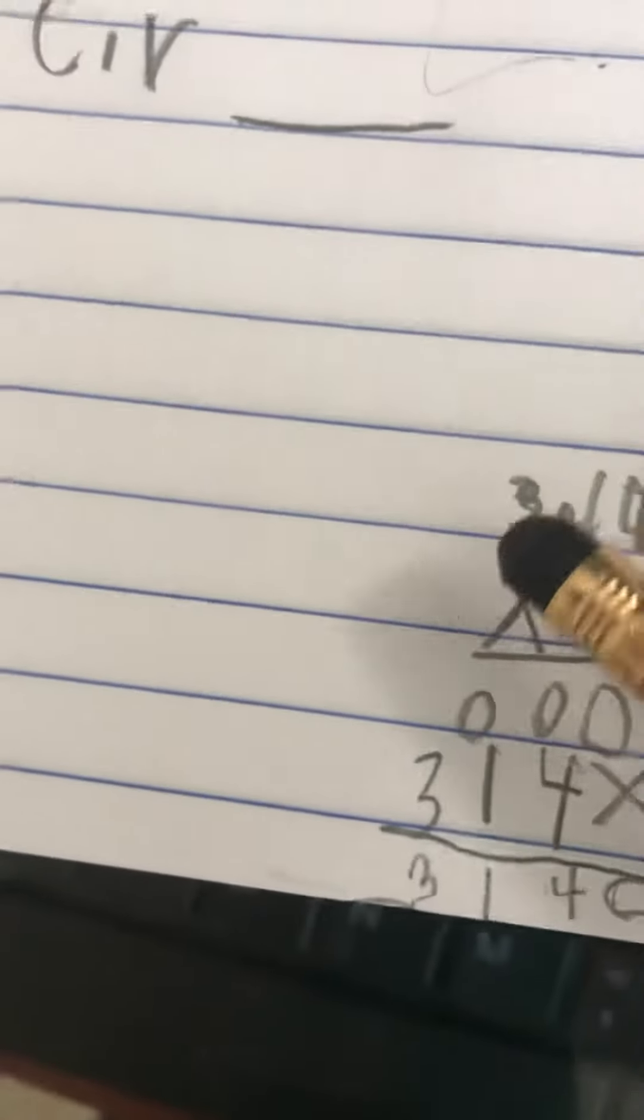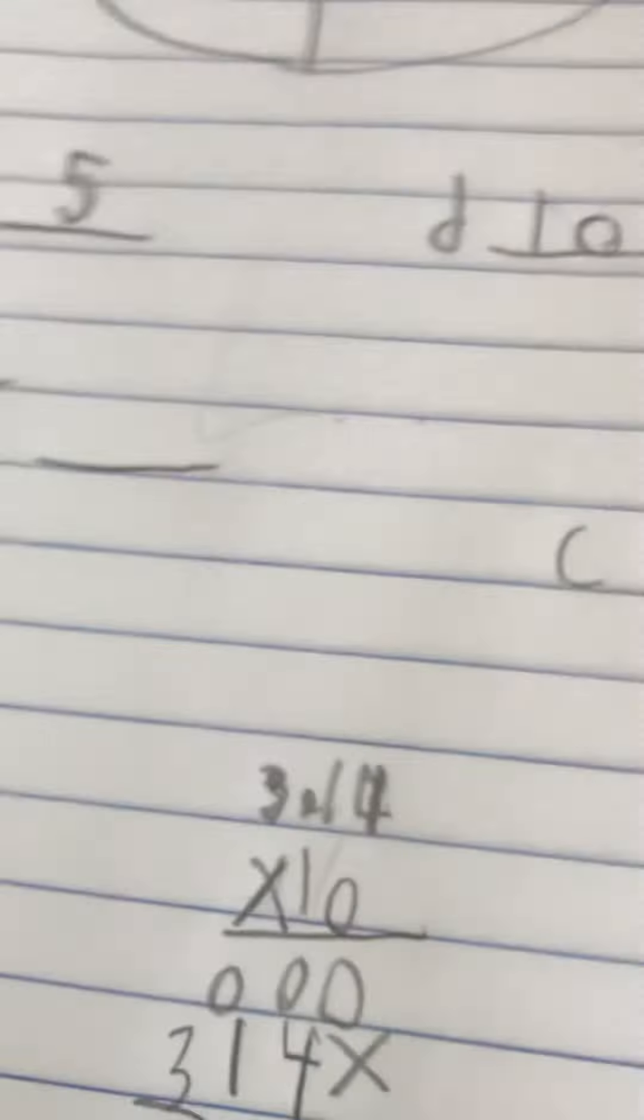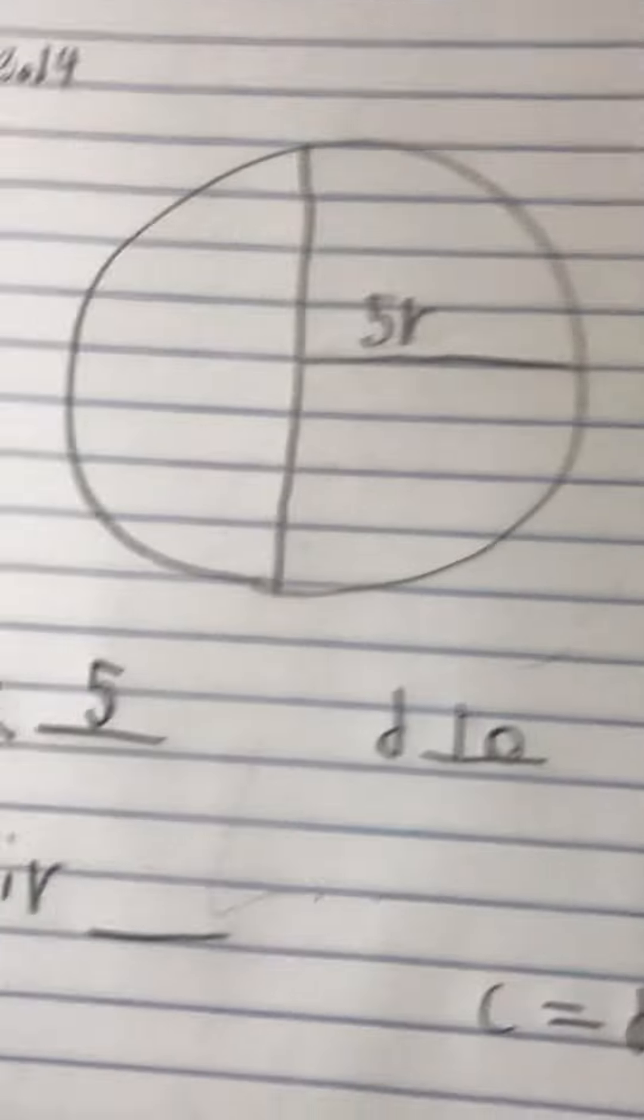So add it up, you get 0, 4, 1, 3. Now place the decimal - it's two after one four, so it's one two right here. So 31.40. That will be our answer to circumference.